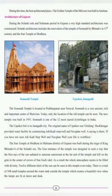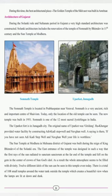Architecture of Gujarat: During the Solanki rule and Sultanate period in Gujarat, very high-standard architecture was constructed. Solanki architecture includes the renovation of the Somnath temple by King Bhimdev I in the 11th century and the Sun Temple at Modera. The Somnath temple is located in Prabhas Patan near Veraval and is a very ancient, rich and important center of Shaivism. The new temple was built in 1951.